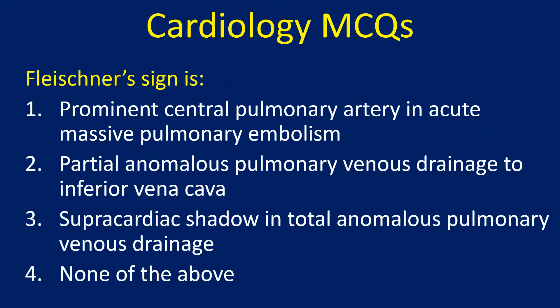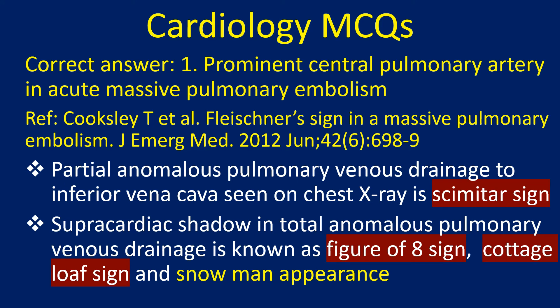Fleishner's sign is: 1. Prominent central pulmonary artery in acute massive pulmonary embolism, 2. Partial anomalous pulmonary venous drainage to inferior vena cava, 3. Supracardiac shadow in total anomalous pulmonary venous drainage, 4. None of the above. Correct answer: 1. Prominent central pulmonary artery in acute massive pulmonary embolism.